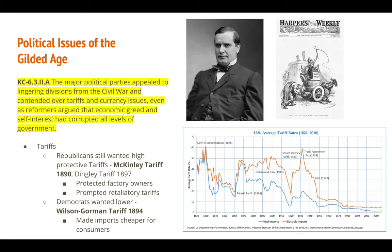One of the key issues these two parties debate is the tariff. Republicans still want a high protective tariff because their strongholds are in the North, where there is much more industrial capacity that benefits from making foreign goods less competitive in the American market. The biggest of these tariffs are the McKinley tariff of 1890 and the Dingley tariff of 1897, visible as big upswings in the US average tariff rates chart.